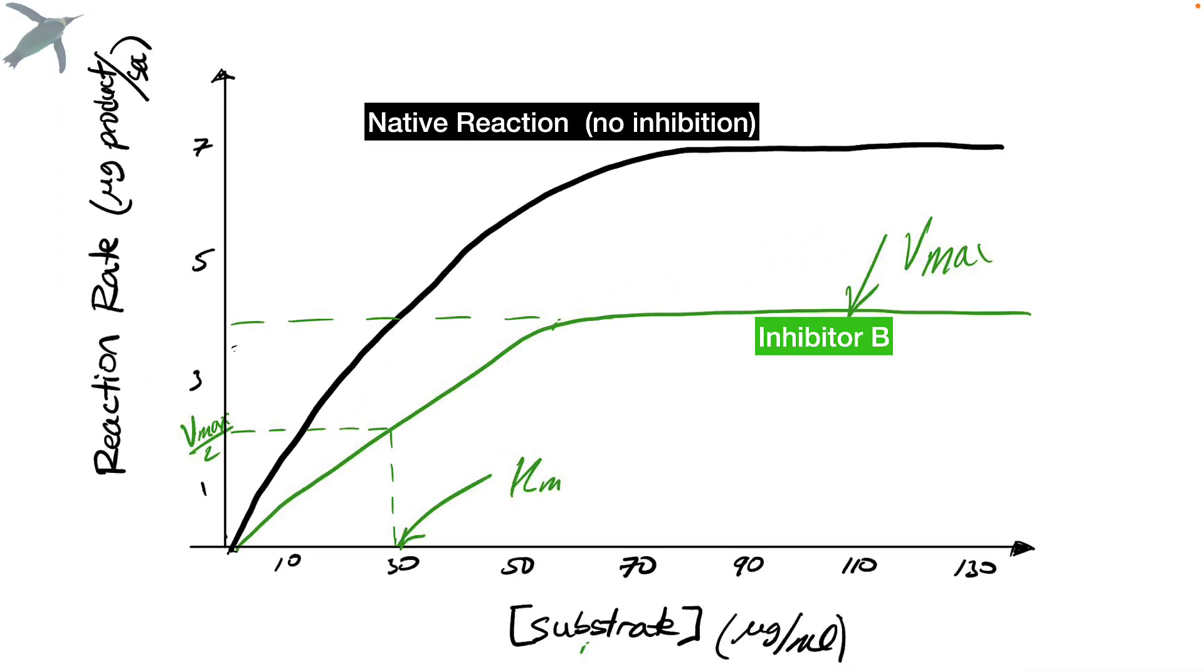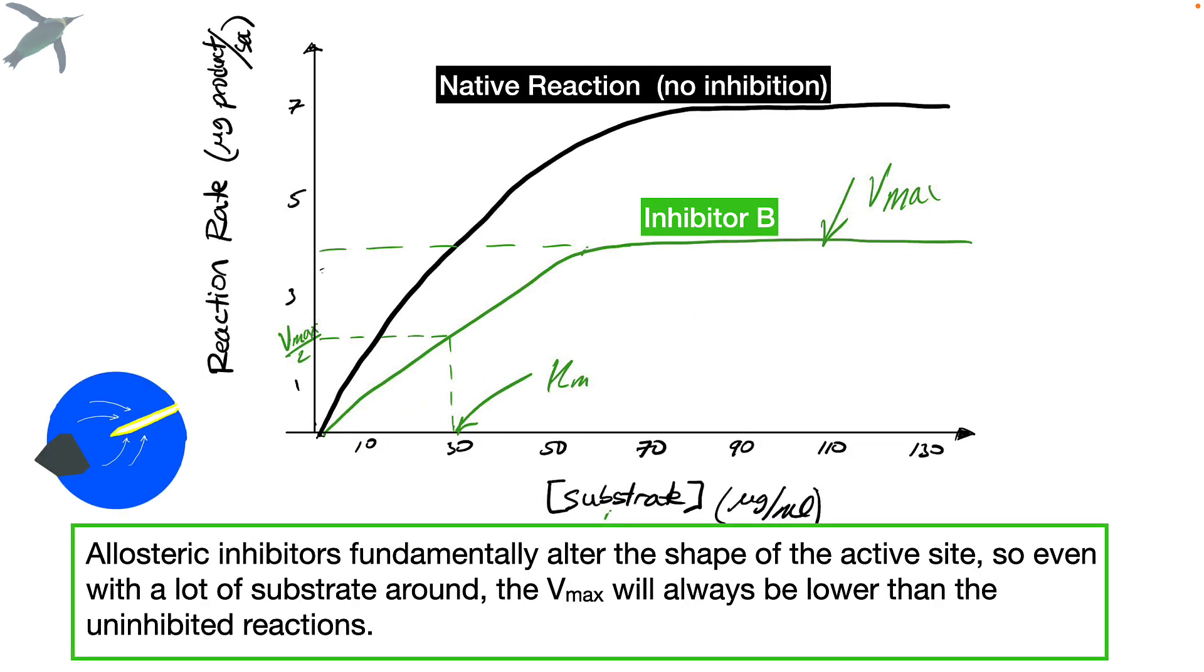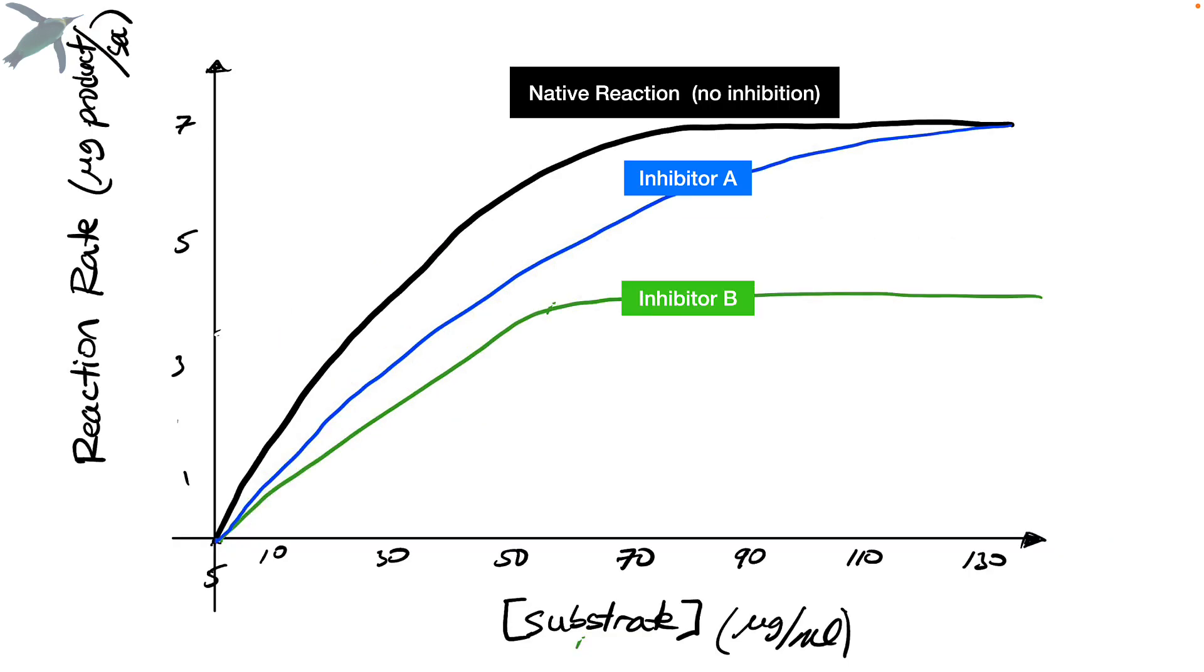Compare this to inhibitor B. It should just jump out at you now. Inhibitor B, you never get to that same Vmax. This is because the inhibitor that is allosteric fundamentally changes the shape of the enzyme. So no matter how many substrate molecules you throw in there, it's never going to achieve the same reaction rate as the uninhibited reaction. So when you're comparing two inhibitors and you're looking at enzyme kinetics, you can tell what kind of inhibition is going on, even though we can't actually see it. If the same Vmax is achieved, you know it's competitive, and if the same Vmax is never achieved, you know it's allosteric.